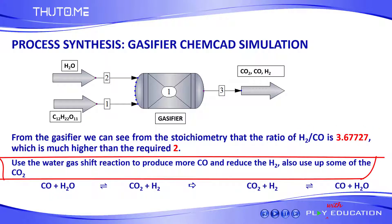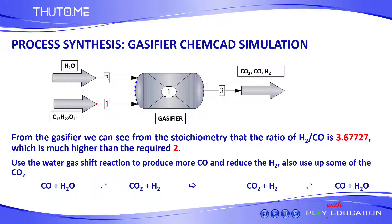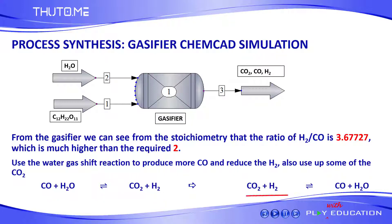We are going to use the water gas shift reaction to produce more CO and reduce the quantity of H2; we will also use up some of the CO2. The water gas shift reaction is usually given in the conventional direction; therefore, we are going to use it in the reverse direction, which is the direction where hydrogen reacts with CO2 to form CO and water.